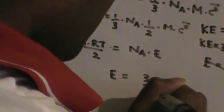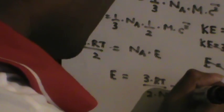To create the one-half factor, I'll divide both sides by two. So one-half RT equals one-third times Nₐ times one-half times M times c-squared-bar. Since one-half M c-squared-bar is the kinetic energy E, cross-multiplying gives three RT over two equals Nₐ times E. Therefore, E equals 3RT divided by 2Nₐ.